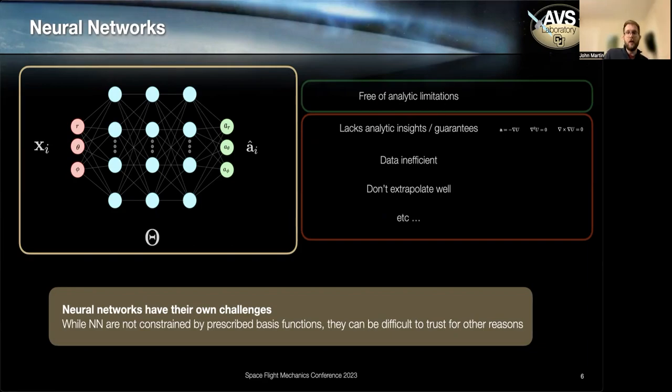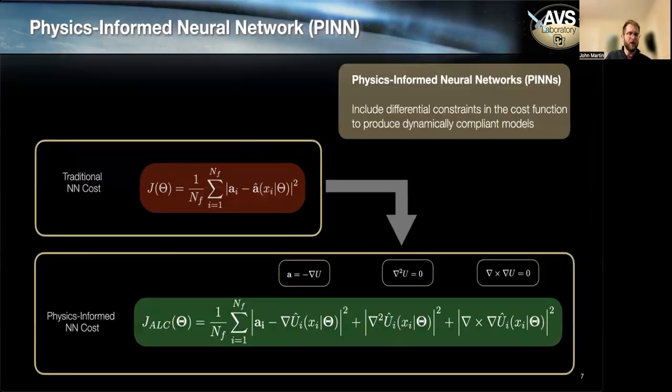And one of the quick ways to improve the performance of this solution is use something called a physics-informed neural network. So we talked about spherical harmonics being great because it's a solution to Laplace's equation. But what if we just add Laplace's equation to the cost function of a traditional neural network? This is the transition between a traditional and physics-informed neural network.